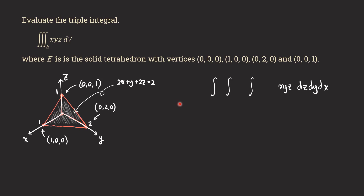Now we start setting up the triple integral. I write down the iterated integrals with the limits blank to fill in later. The integrand stays the same — we copy it — and for dV I'm writing dz dy dx. You may ask: can we integrate in another order? Yes, but here I'm choosing to project onto the xy-plane, which feels more natural for this particular problem. Depending on the situation you might project onto a different coordinate plane.